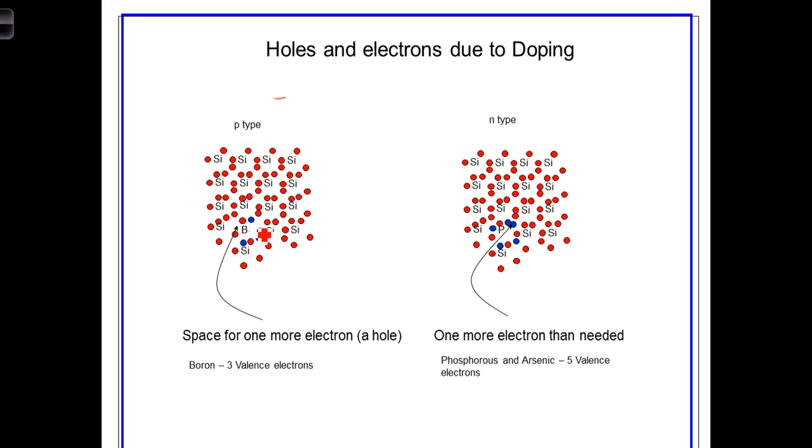On the other side of the 4A column, elements in the 5A column, just to the right of the 4A column, contain five valence electrons, or one more than needed for the four possible covalent bonds with silicon. When they displace a silicon atom in the lattice, there's an extra free electron that remains unpaired. So for example,